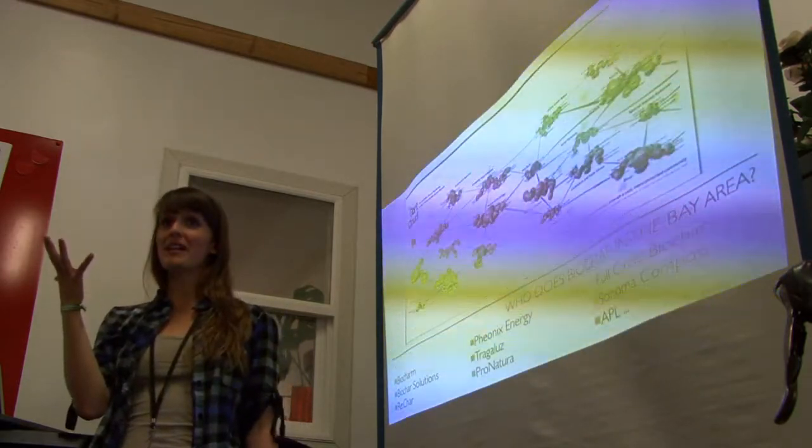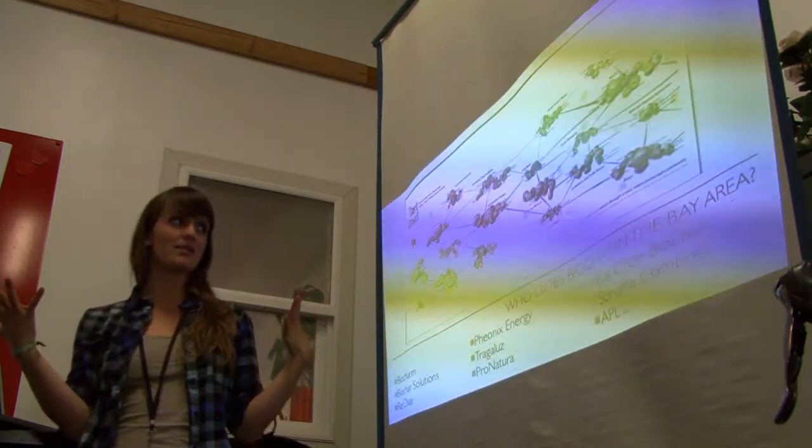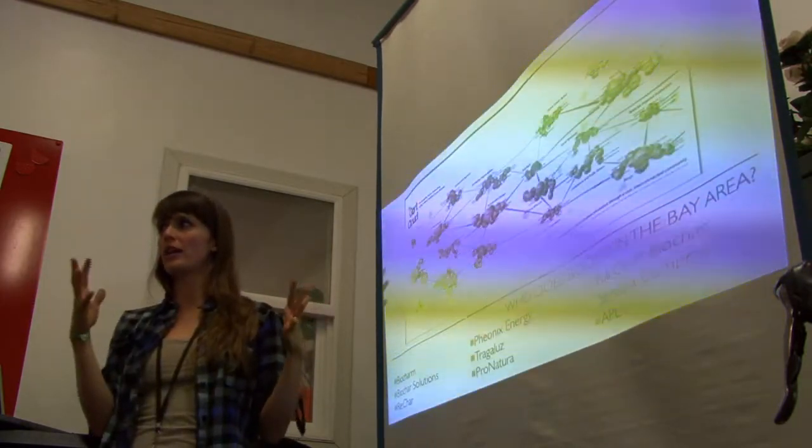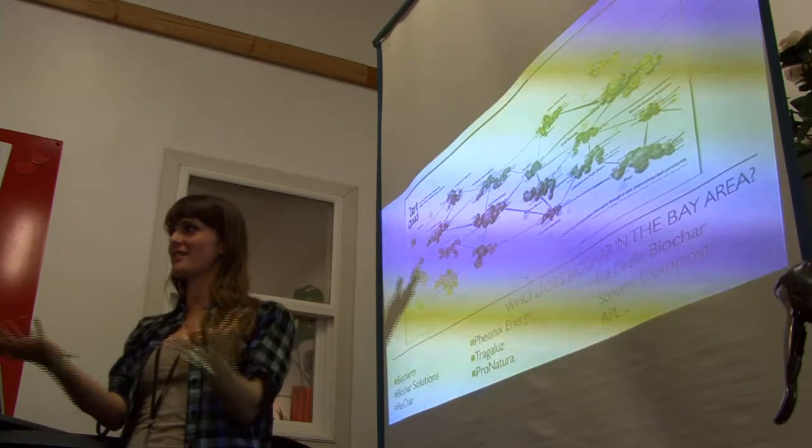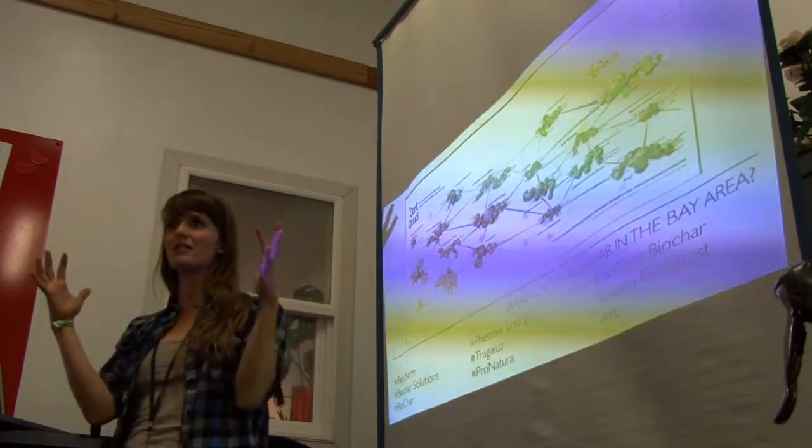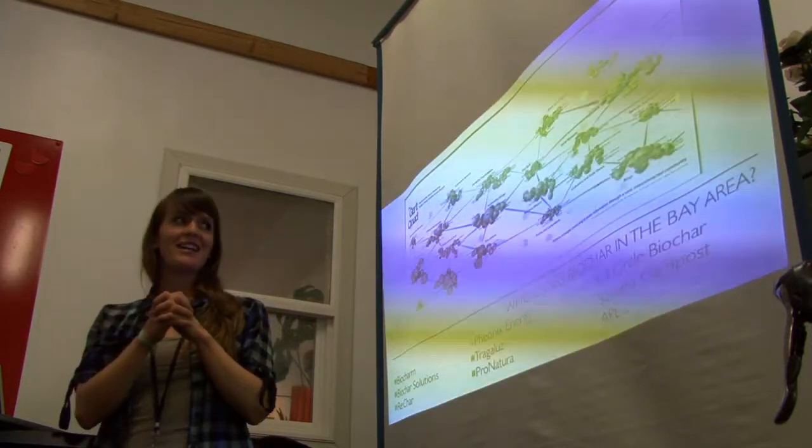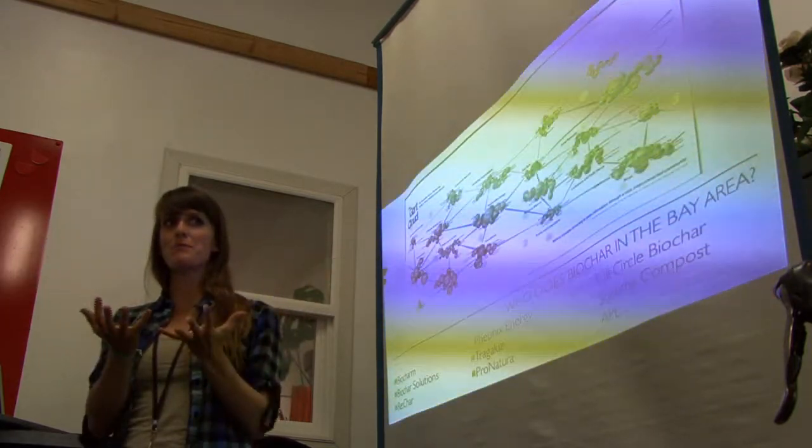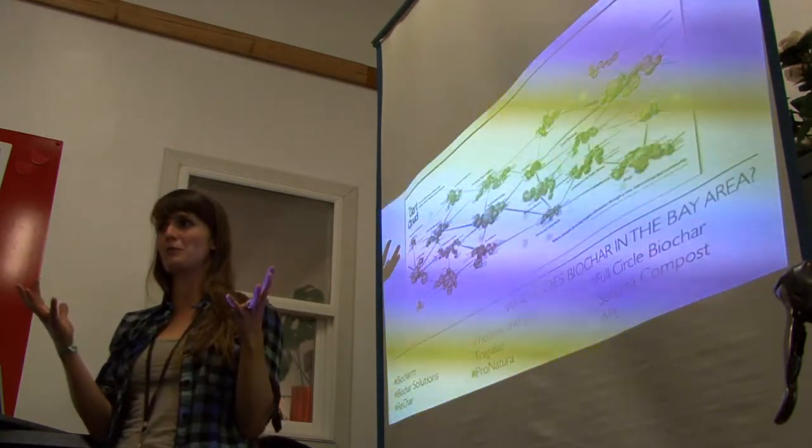So the Bay Area is this hub for so many awesome things. This is the thing called the Gort Cloud, which is the Green Oort Cloud. The Oort Cloud is this thing around our solar system that protects us from comets. The Gort Cloud is this green network of people that protects us as a green movement.